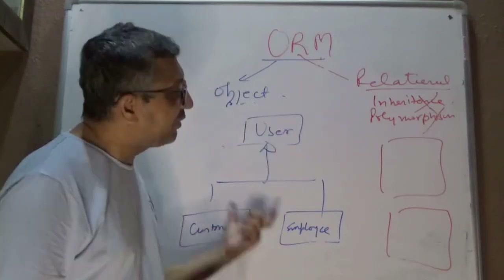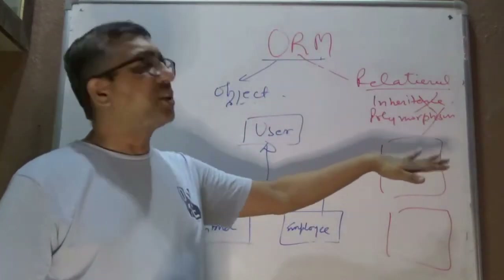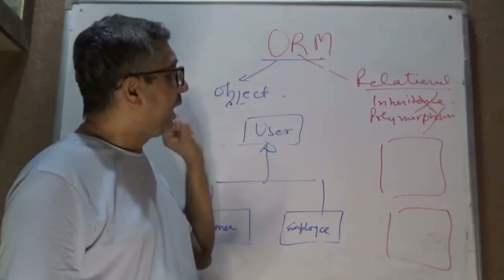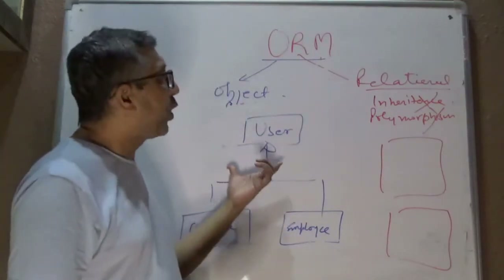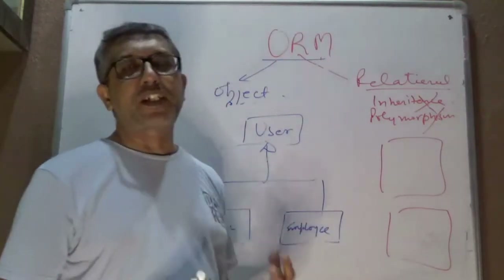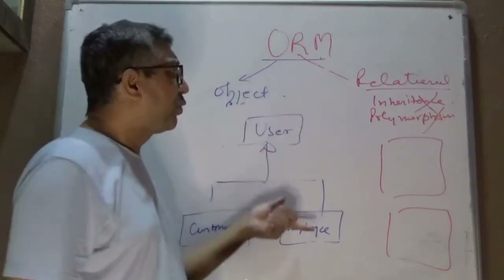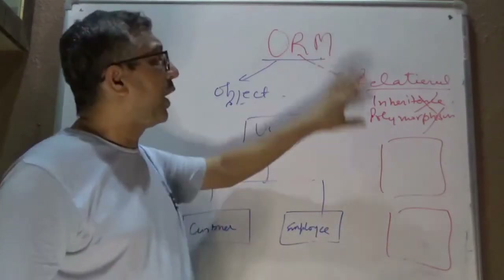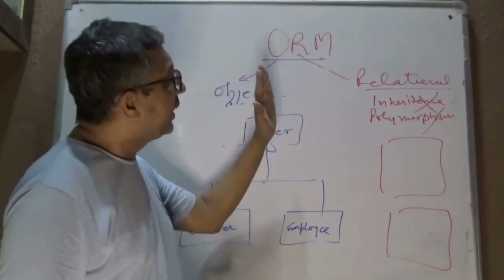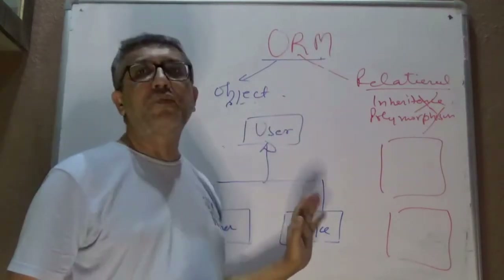ORM frameworks map these different data points to different table structures on the relational side and ensure the mapping works seamlessly. They handle fetching — when you fetch users it fetches customers and employees, but when you fetch only customers it fetches just customers. The important idea is that there is a conceptual mismatch and ORM frameworks help you map through it.